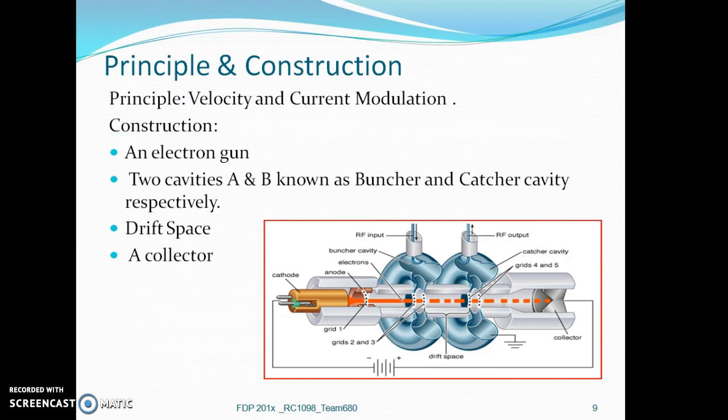Let us understand the principle and construction of Klystron. The principle which is used is velocity and current modulation. The five important components are an electron gun to generate the electron beam, two cavities - cavity A called the buncher cavity separated by a drift space, and cavity B called the catcher cavity. The electron beam is collected by the collector.